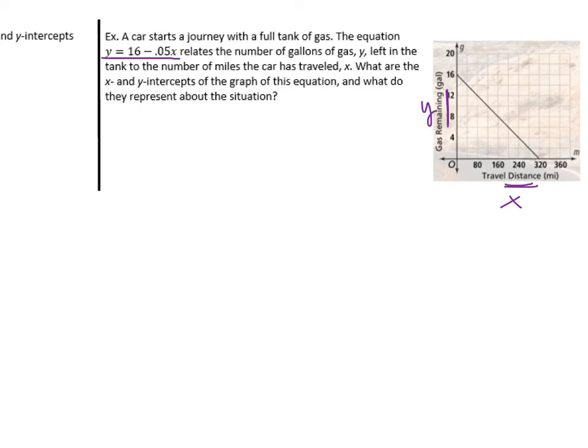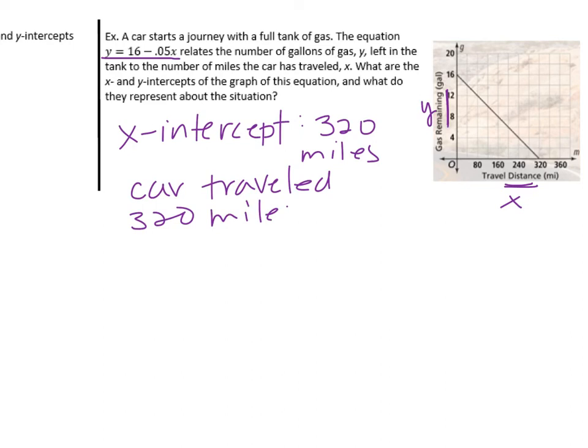So what are the intercepts, and what do they represent? If we look at the x-intercept, where it crosses the x-axis, it looks like it's 320 miles. Think about what that means based on this given information. That would mean the car traveled 320 miles and ran out of gas.